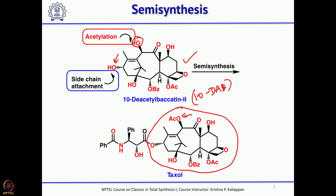Fortunately, the 10-DAP isolated from the leaves of Pacific yew trees could be used for making several analogues of Taxol, and some of those analogues were found to be more active than the parent compound Taxol. The second advantage is that the leaves of Pacific yew trees grow faster. So you can remove leaves, isolate 10-DAP, convert it into Taxol, and after some time you see the leaves growing again. This way you do not have to cut the Pacific yew tree. You just isolate 10-DAP from the leaves, do some functional group transformation, and complete the synthesis of Taxol.